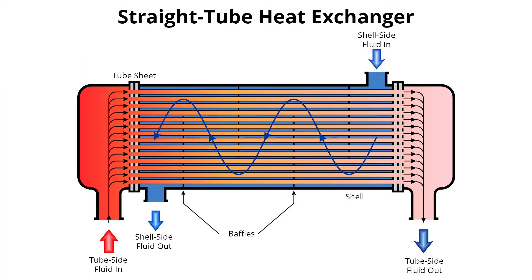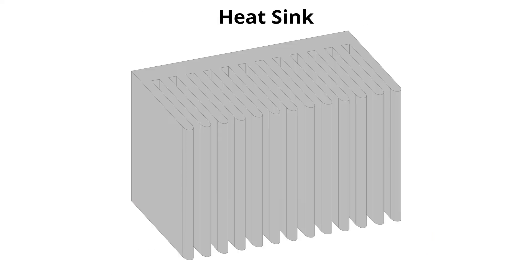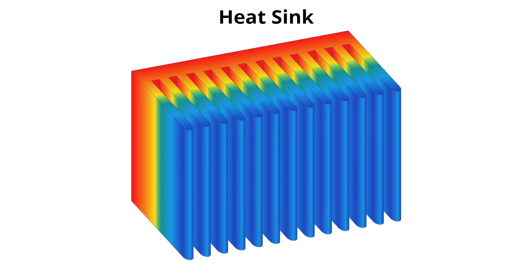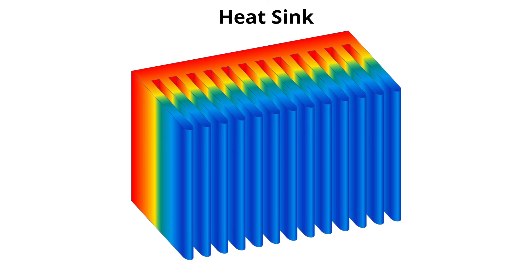Typical examples of heat exchangers use pipes and tubes to circulate coolants, heating the air that passes over those coils. Another example is the heat sink, a stack or arrangement of plates that draw heat from an electronic or mechanical device and transfer the heat to the surrounding environment.